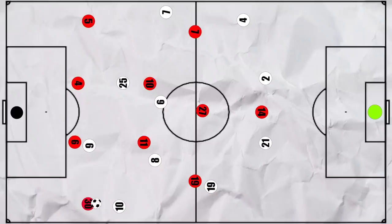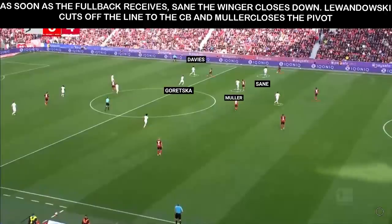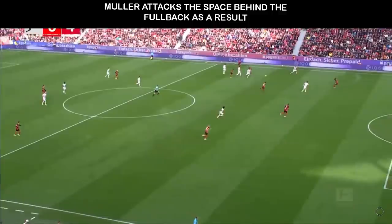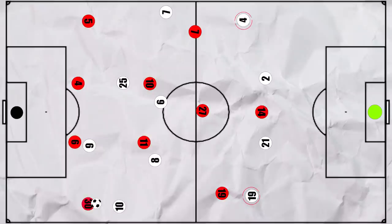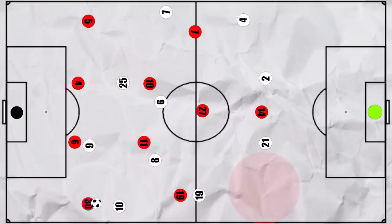This leads to a goal. Leverkusen played the ball into the fullback and Muller covers a pivot, whilst Lewandowski does the same to the centre back. Sane then engages with the pivot, also cutting off any easy option. This forces a sloppy pass and the region behind the fullback is attacked, leading to the goal. However, the Bayern fullbacks can be vulnerable — on a few occasions when the Leverkusen wingers dropped deep, the Bayern fullbacks remained touch tight to back up the lateral press, so space opened up behind them that could be exploited.